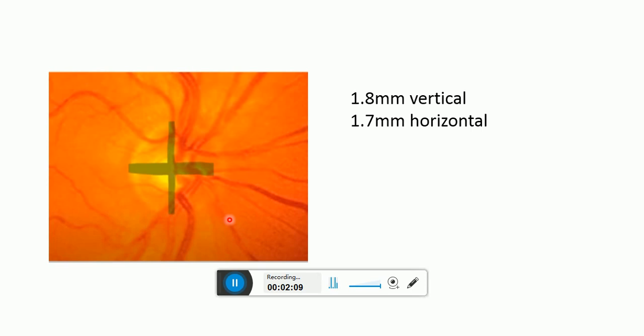Now the normal optic disc appears as a vertically oval structure with average dimension of 1.92 mm vertically and 1.76 mm horizontally and 2.69 mm square in surface area.